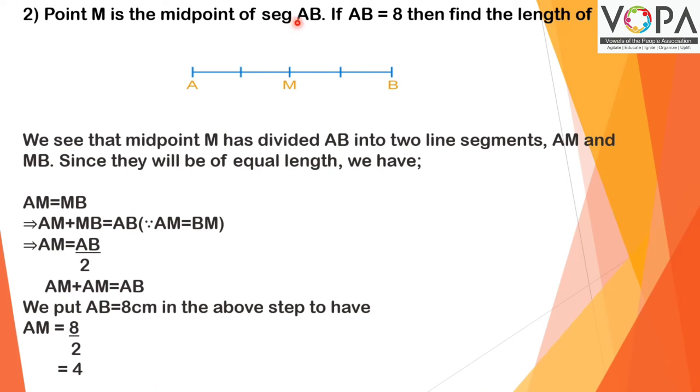Here in this figure we can see M is the midpoint of AB and M has divided AB into two equal parts, AM and MB. Since they are of equal length, we have AM = MB.